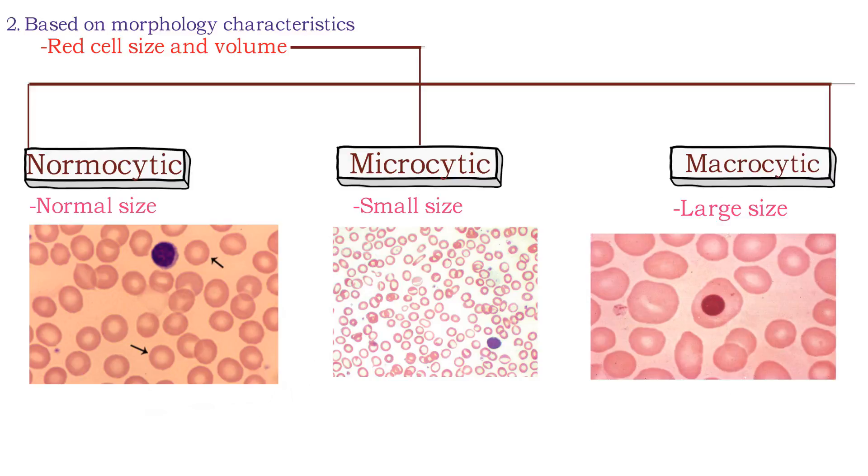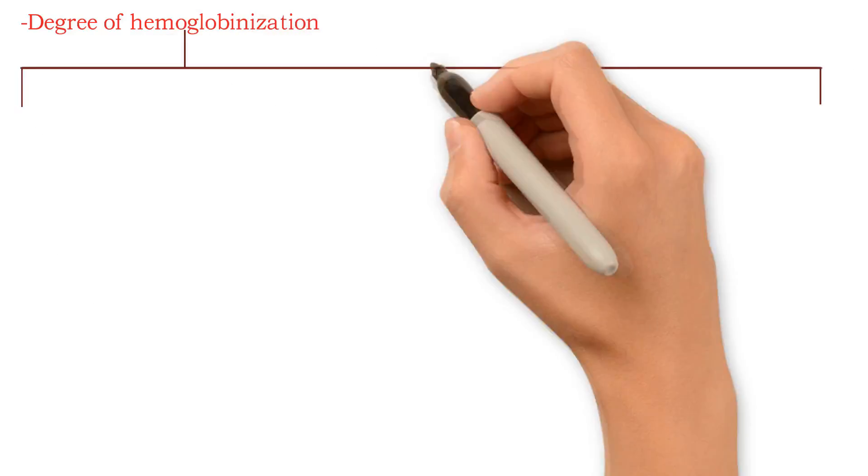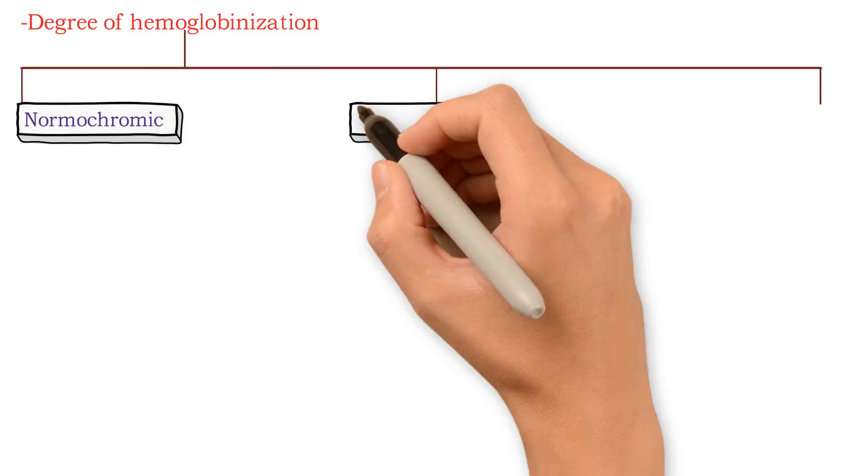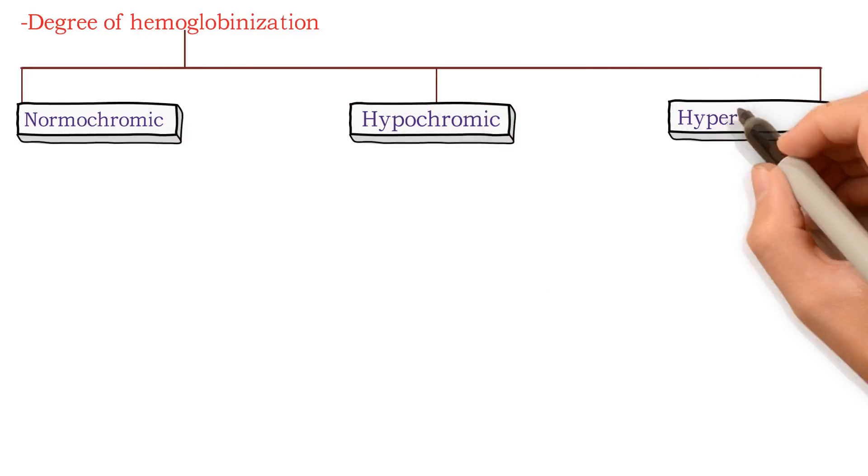In megaloblastic anemia, red cells are macrocytic and oval, may be normochromic or may also appear hyperchromic. Degree of hemoglobinization: hemoglobin content reflects in color of red cells—normochromic, hypochromic, or hyperchromic.